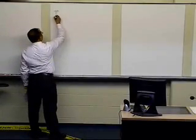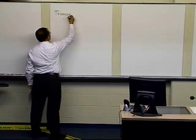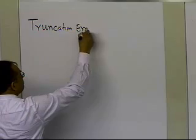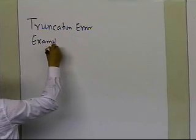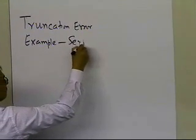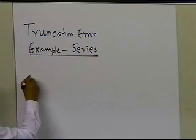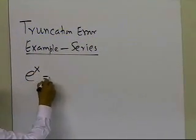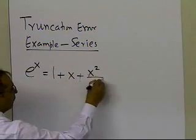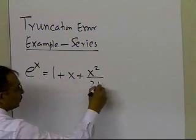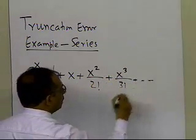In this segment, we're going to look at an example of truncation error, and this example is going to relate to a Maclaurin series. For example, if we have e to the power x, the Maclaurin series for that is given as 1 plus x, plus x squared by factorial 2, plus x cubed by factorial 3, and so on and so forth.